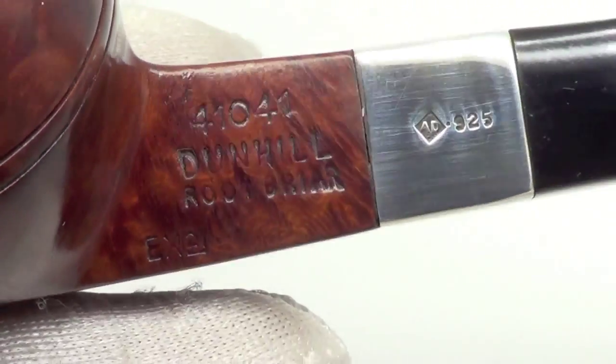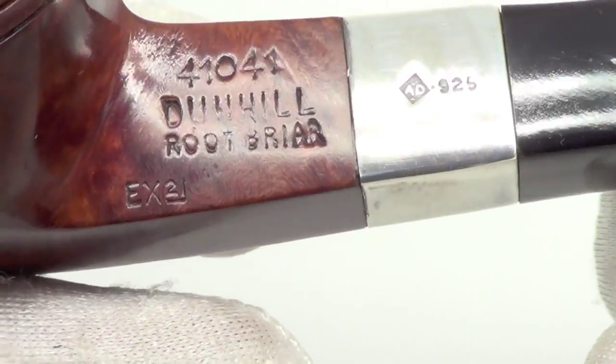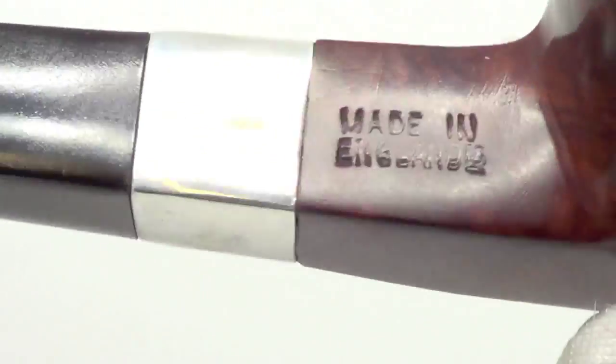Pipe is marked Dunhill root briar EX 21 41041. AD stamps on the silver band so you know it's original.